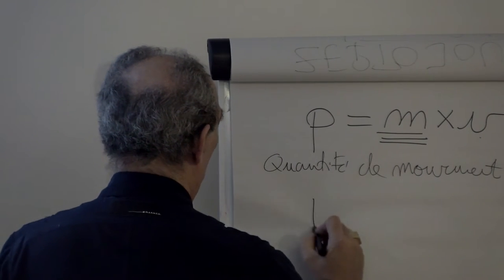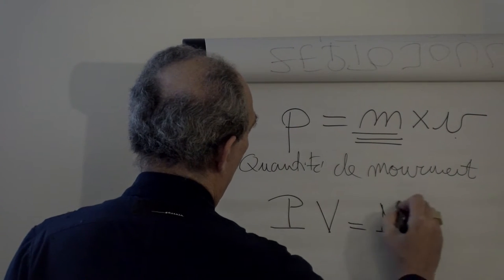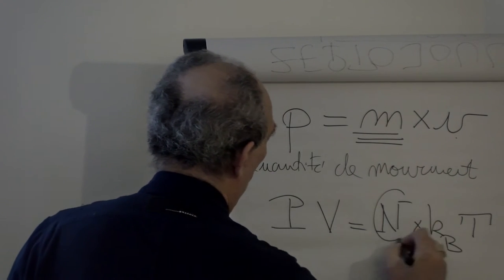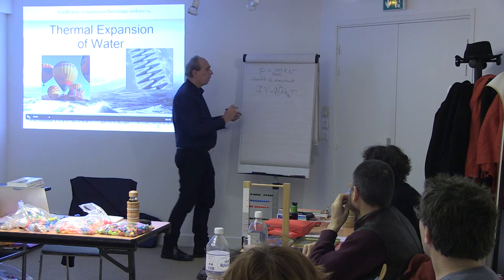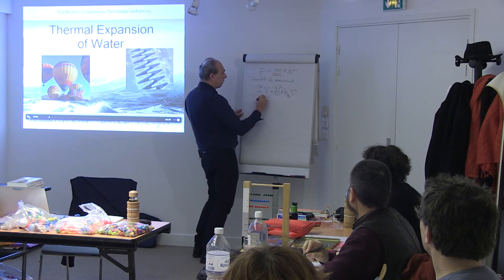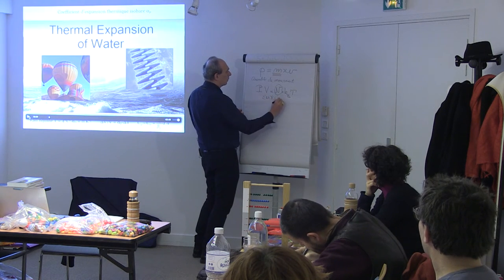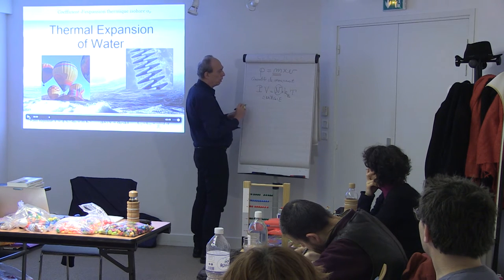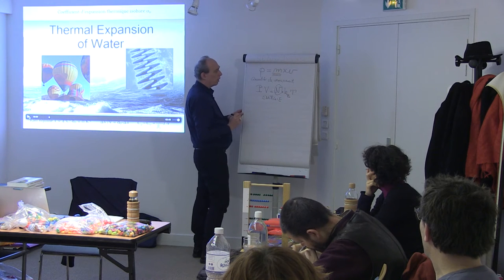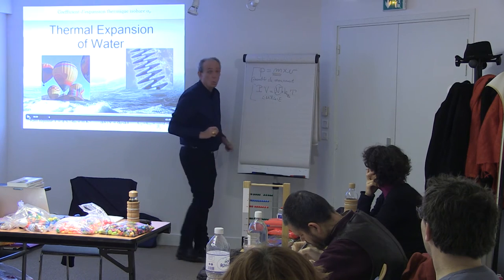Là, j'ai le nombre. Ici, c'est la pression. Là, c'est le volume. Là, c'est la température. Et là, ça, c'est une énergie. Parce que le produit d'une pression par un volume, c'est une énergie. Le produit de la constante de Boltzmann par une température, c'est une énergie. Donc je suis avec la quantité de mouvement pour la masse et avec l'énergie pour le nombre.